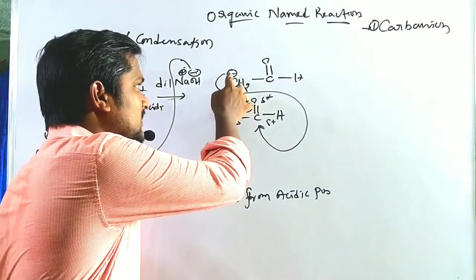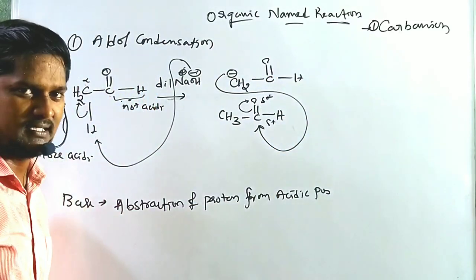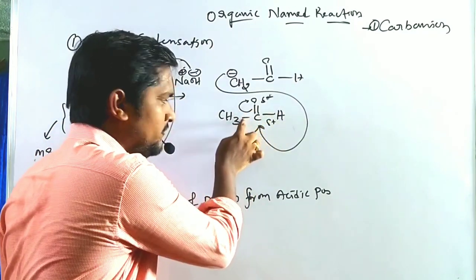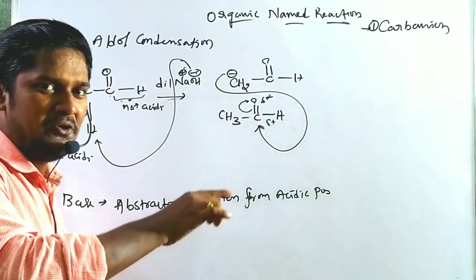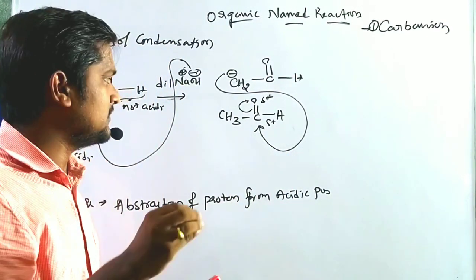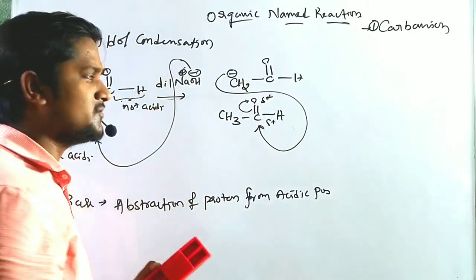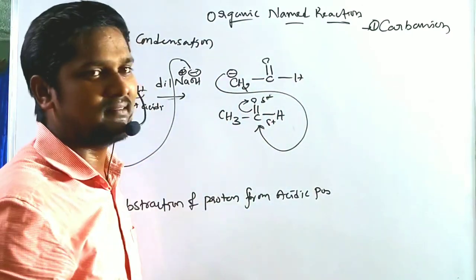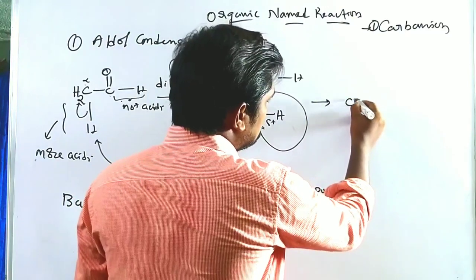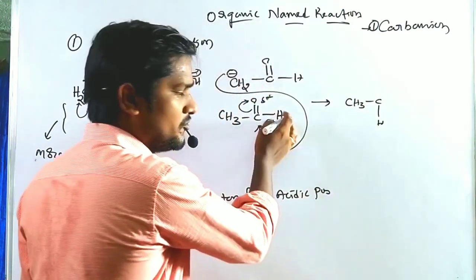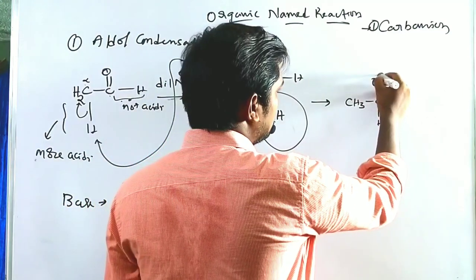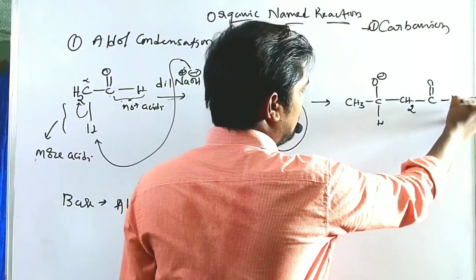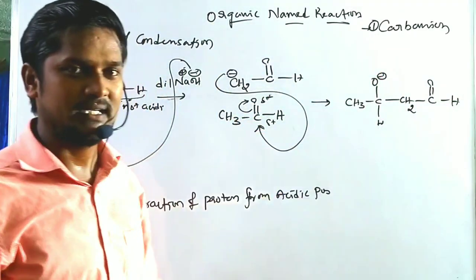The nucleophile attacks the electrophilic carbonyl carbon. Carbon normally has a valence of four, so when the nucleophile attacks and would make it five bonds, one pair of bonded electrons shifts toward the more electronegative oxygen, giving O⁻. We get CH3CH(O⁻)–CH2–C=O, where the O⁻ is the negative part of the oxyanion intermediate.